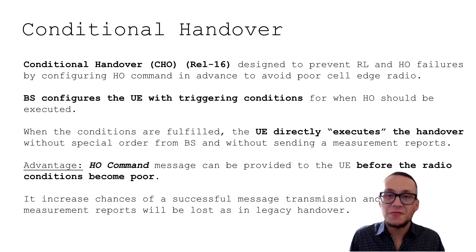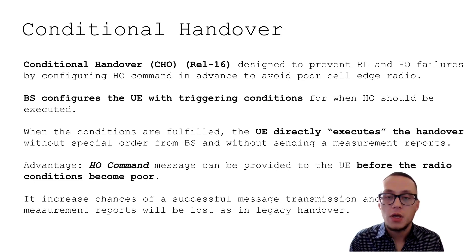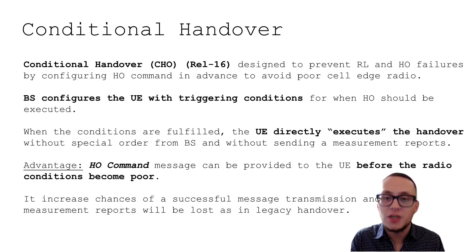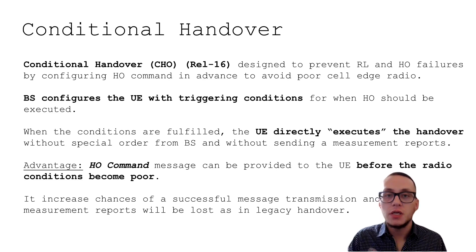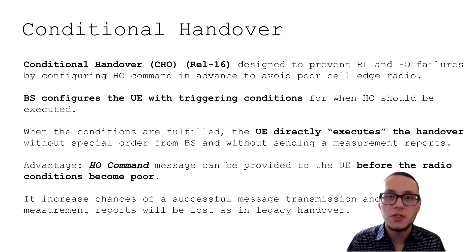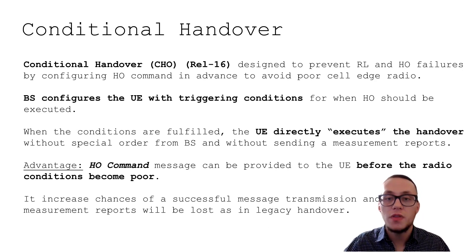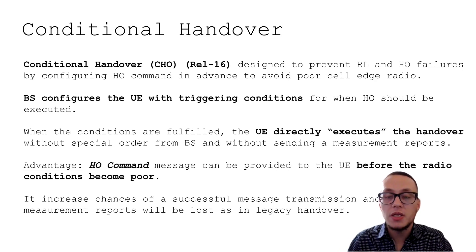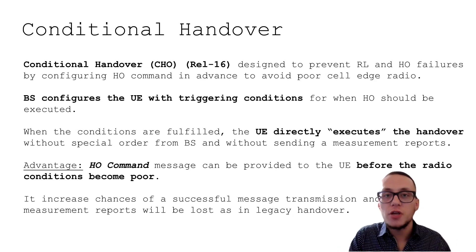In order to prevent those situations — radio link failures and handover failures — in Release 16, conditional handover was designed. Basically, conditional handover is when the base station configures the user equipment with special triggering conditions defining when and how the handover should be executed. When those special conditions are fulfilled, the UE executes the handover without any handover commands or measurement reports in the uplink direction, because the handover command was already sent to the UE earlier.